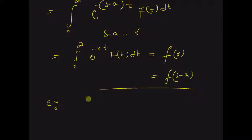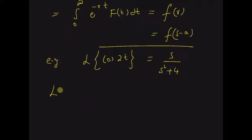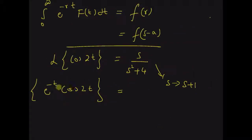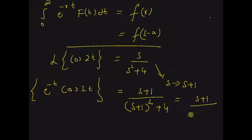Let us look at an example. We know that the Laplace transform of cos(2t), that is our f of t, is equal to s over s squared plus 2 squared, which is 4. Now, the Laplace transform of the product e power minus t with the function cos(2t) is equal to — we basically replace s with s plus 1. Since a is equal to minus 1, we replace the parameter s with s plus 1 in this result, which becomes s plus 1 over s plus 1 whole square plus 4, which is equal to s plus 1 over s squared plus 2s plus 5.